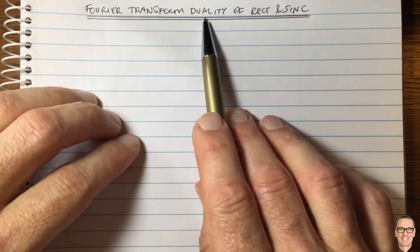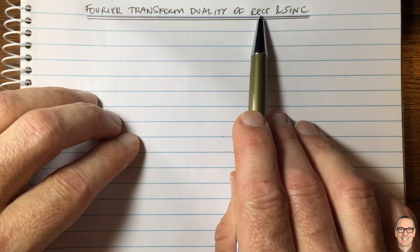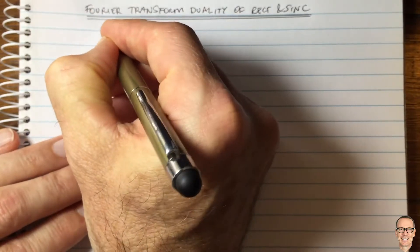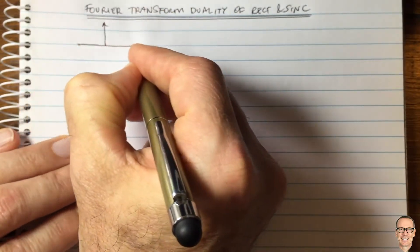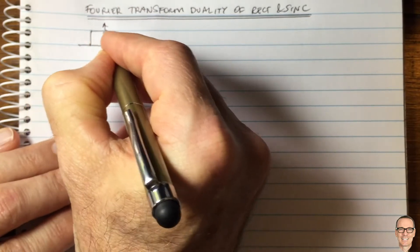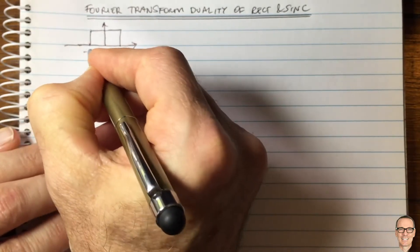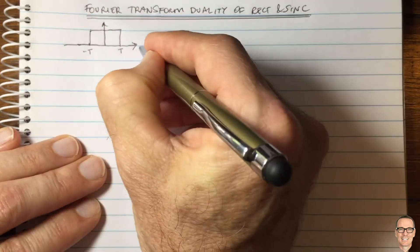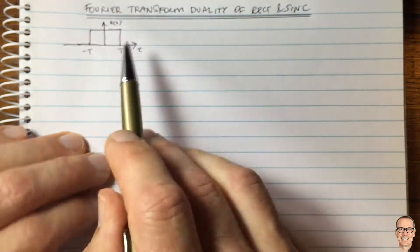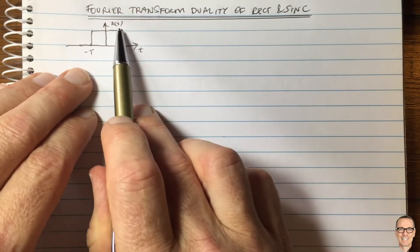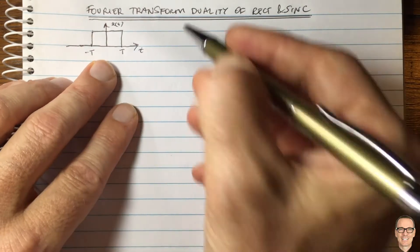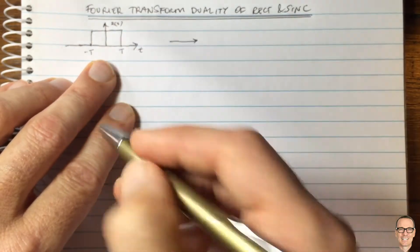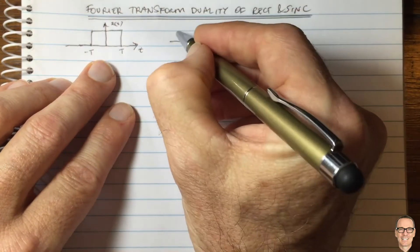Let's look at the Fourier transform duality of the rect function — a square function — and the sinc function. The square function is very common in electronics and digital communications. It is zero for all time outside the range minus T to T, equals one between minus T and T, and is often used for sending digital data: switching on for a digital one and off for a digital zero. We need to understand the spectrum of that signal to know the bandwidth required in digital communications.